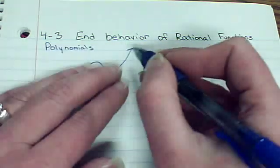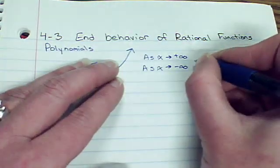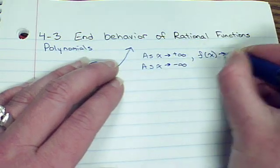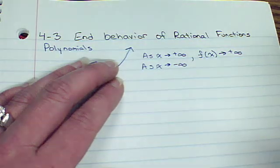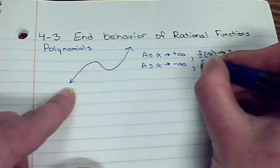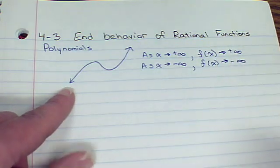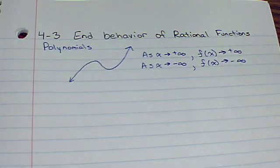We're talking about positive infinity, we're talking about the right side. So what is my graph doing there? My graph is going straight up, it's going to positive infinity as well. On the other side, it's going straight down. So f of x is going to negative infinity. So polynomials will always go to either positive or negative infinity.